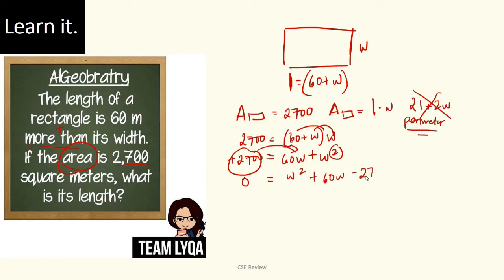In order for us to factor this, we'll move everything to one side. You can transfer 2,700 to the other side. If it's positive here, it becomes negative on the other side. So this becomes zero equals W squared plus 60W minus 2,700.